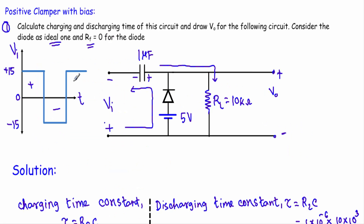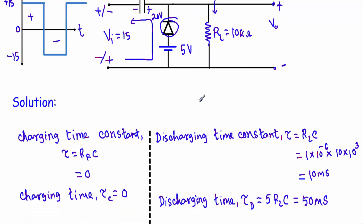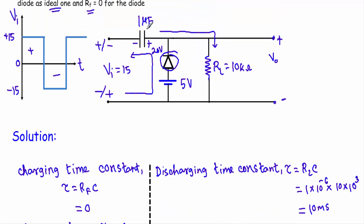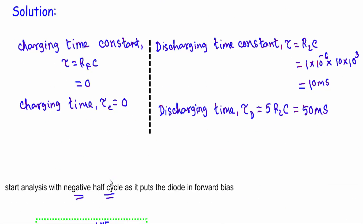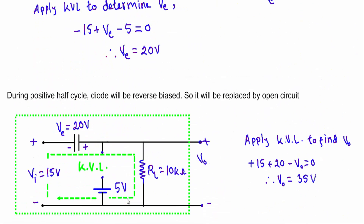Now, what will happen when the alternating signal is at the positive half cycle? When the square wave is in the positive half cycle, this terminal will be positive and this terminal will be negative, so the input voltage is +15 volts. At that time, the capacitor stores a voltage of 20 volts. Since the diode is reverse biased, I replace the diode with an open circuit. Since the discharging time constant is much much higher than the charging time, the capacitor will hold the voltage of 20 volts until there is a transition in the input voltage.